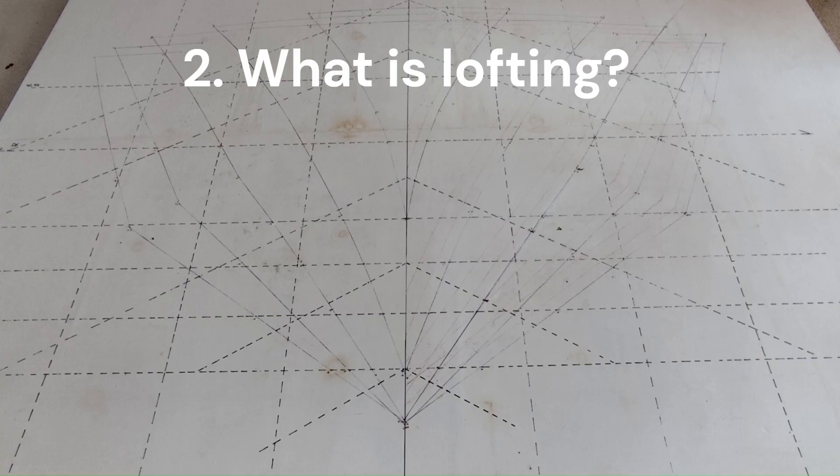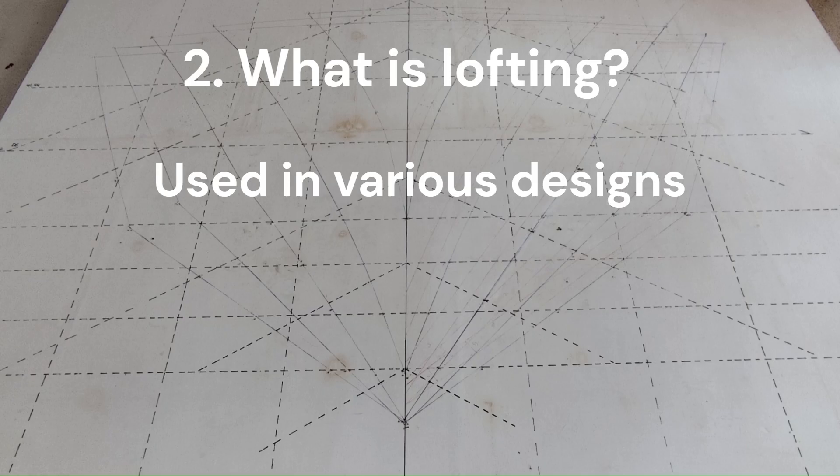Two, what is lofting? Lofting is a modeling technique used to create a 3D shape by defining a series of 2D cross-sectional profiles called lofts and then generating a smooth surface or solid that transitions between them. Lofting is not used only in boat building but also in aircraft design, automotive design, and 3D modeling, for example, in software like SolidWorks, AutoCAD, and Fusion 360.